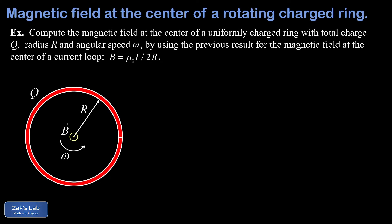In this video, we're calculating the magnetic field at the center of a rotating uniformly charged ring. In the diagram, we see our rotating ring with radius big R, total charge big Q, and angular speed omega.